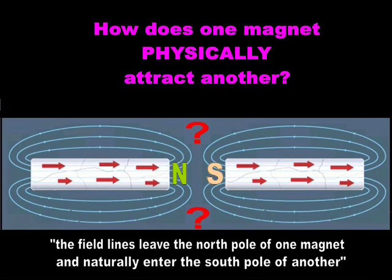How does the North Pole of one magnet physically attract the South Pole of another? What is physically going on at these two ends? One expert answers, the field lines leave the North Pole of one magnet and naturally enter the South Pole of another. This is not an explanation. This is a description. It does not tell you what is physically going on at the North Pole of a magnet to attract the South Pole of another.